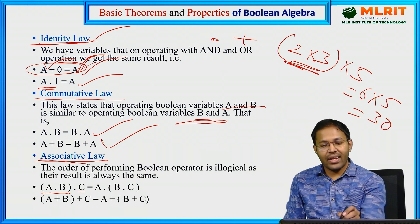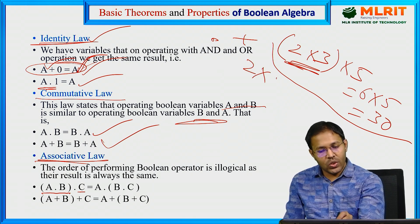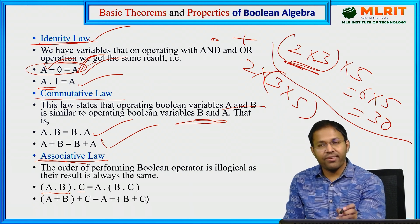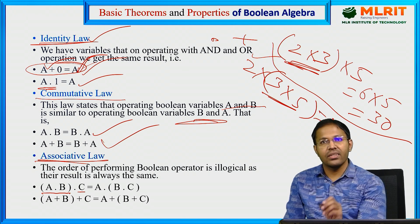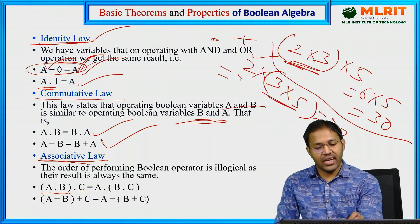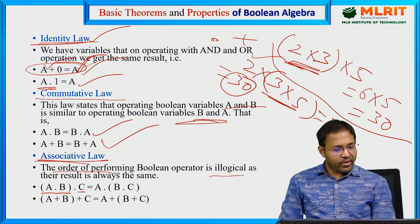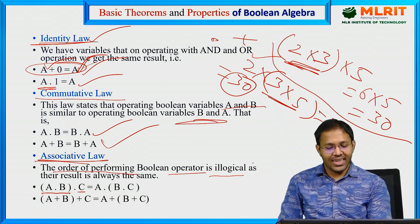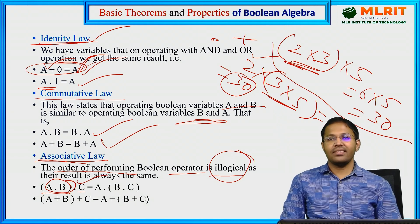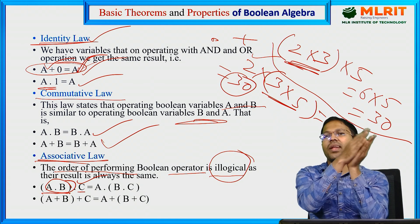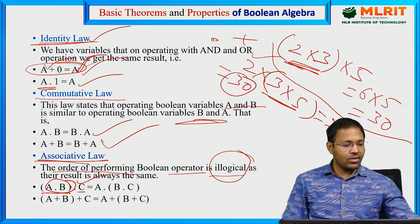Suppose we calculate in a different order. Suppose we do 2 into 3 multiplied by 5, 3 into 5 gives us 15, 15 into 2 again gives us 30. What did we understand from this? The order of performing the operation is illogical. First you do A into B and then multiply by C, or you first multiply B into C and then multiply by A, still it is valid. That was your associative law.